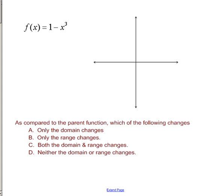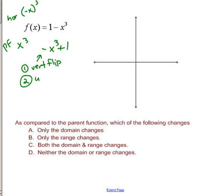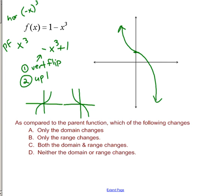Here we have 1 minus x cubed. The trick on this one — my parent function is x cubed. It helps to think of this as negative x cubed plus 1, where that 1 is a positive number; you are adding a positive 1 to negative x cubed. Transformation number 1 is a vertical flip — it's vertical because the negative is not inside the function. Then the next transformation is to go up 1. So I take my original x cubed, do a vertical flip, then take that result and go up 1 — the point 0,0 goes up to 0,1 — and I come down like so.